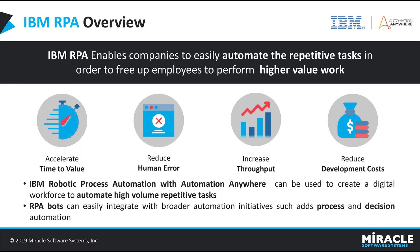Let us move on to the next slide: IBM RPA overview. IBM RPA automates replicated tasks, freeing us to perform higher-value work. Previously, it was called Automation Anywhere, but recently IBM merged with Automation Anywhere and released a new product called IBM RPA. It greatly reduces time and human error, increases speed of work, and reduces internal and external resources.